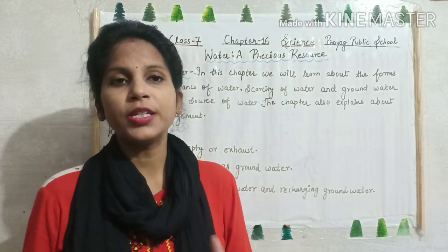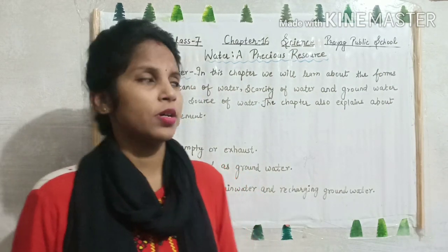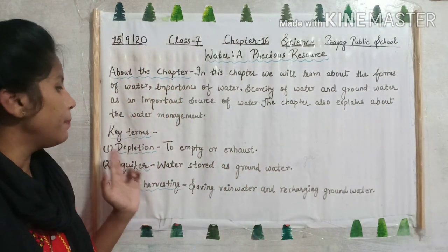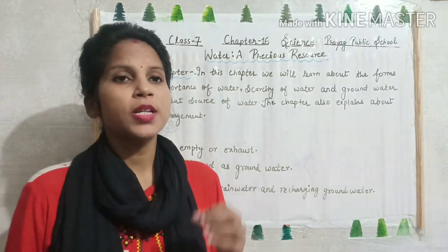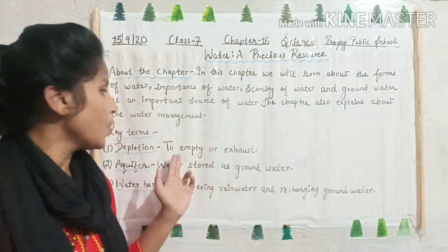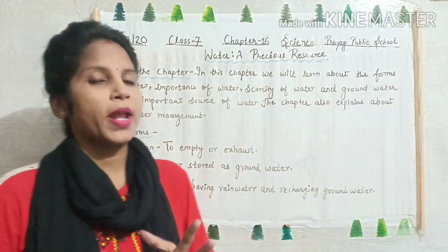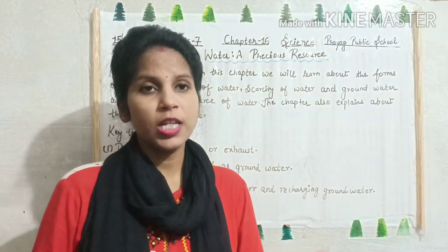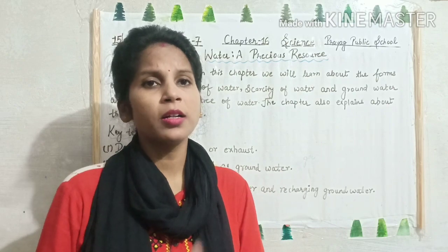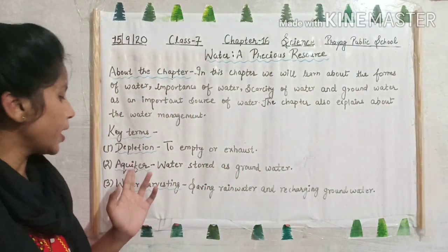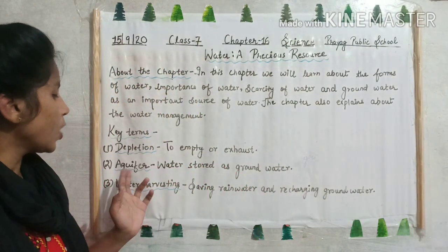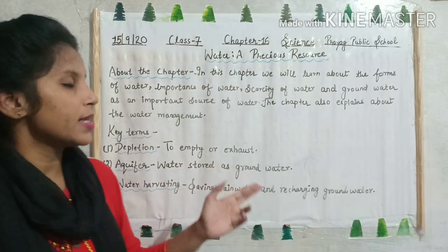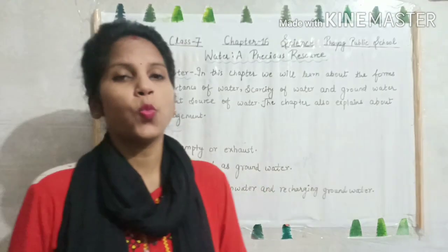Now let's look at some key terms of the chapter. The first one is depletion. Depletion means to empty or exhaust — khali ho jana yaa khatm ho jana. Then the second one, aquifer — water stored as ground water.